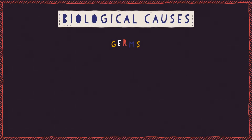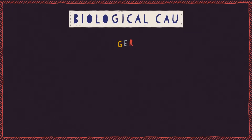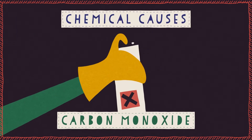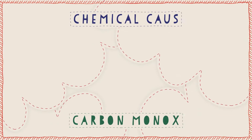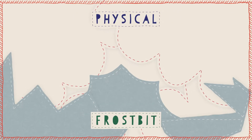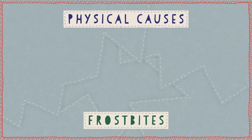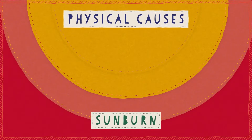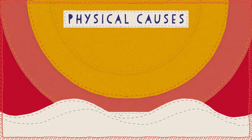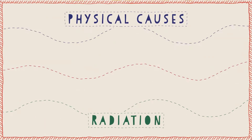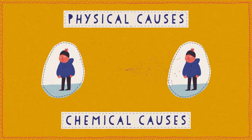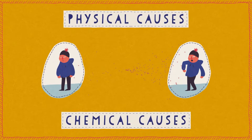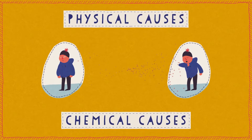Germs are not the only things that can cause disease. There are also chemical causes of disease, like exposure to some gases and pesticides, or physical causes like exposure to cold, heat, ultraviolet light, and radiation. The dose or amount of exposure to these things influences how severe the disease is.